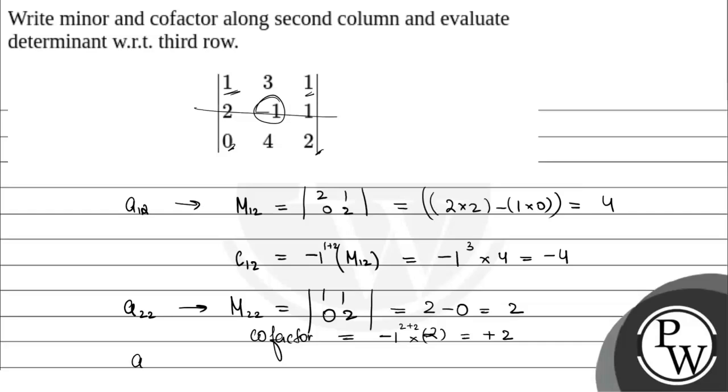Now finally for a₃₂. For M₃₂, we eliminate the third row and second column. This gives us 1, 1, 2, 1, which equals 1 minus 2, which is minus 1.